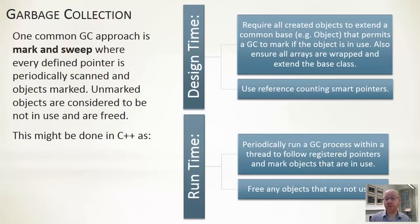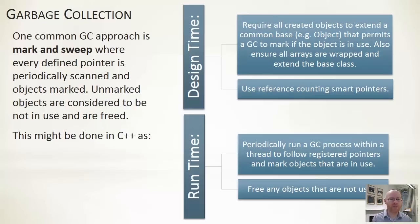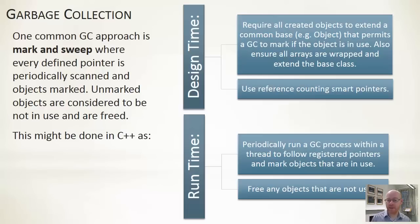The second design decision is that we have to use reference-counting smart pointers — not raw pointers. A raw pointer is just a memory location. A smart pointer points to a location in memory but is a small object in its own right — it embodies additional functionality. It may know how many other things are pointing to it, and can take an action if it gets deleted or goes out of scope. Given those design-time decisions and a program implemented on top of them, at runtime there are a couple of processes we need to carry out.